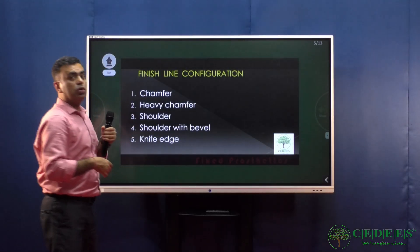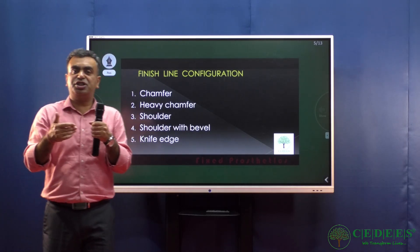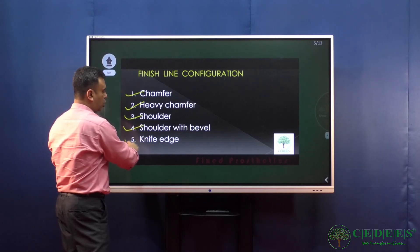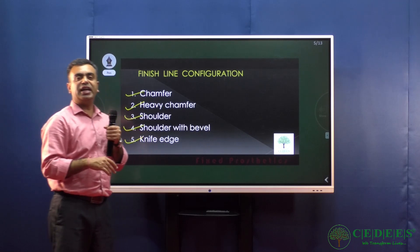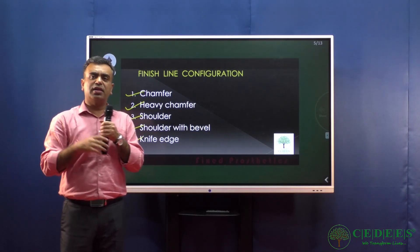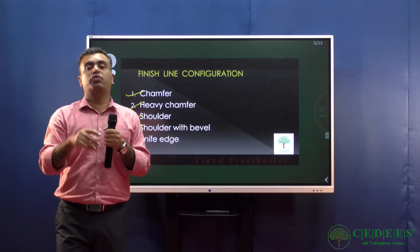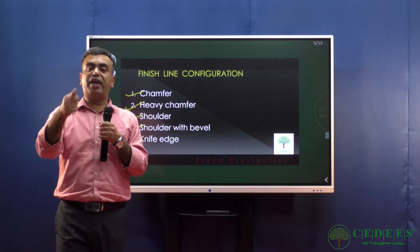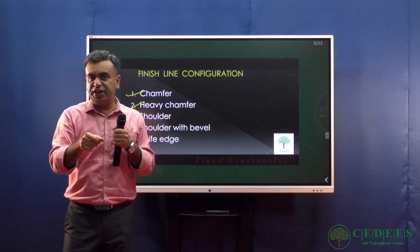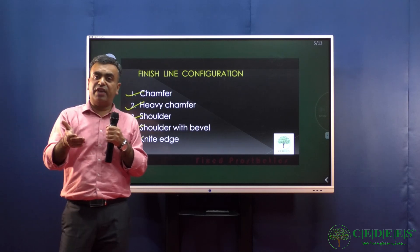Moving on to another classification based on configuration or anatomy of the finish line: it could be chamfer, heavy chamfer, shoulder, shoulder with bevel, or knife edge. The type of restoration being placed decides which finish line to use. A metal crown requires a chamfer finish line wherever metal is the finishing material.